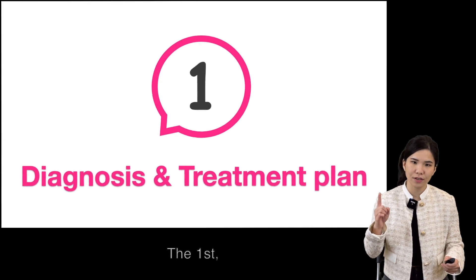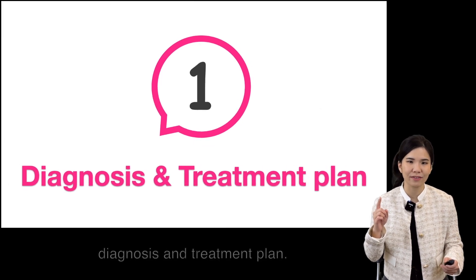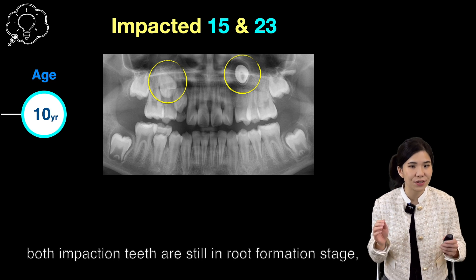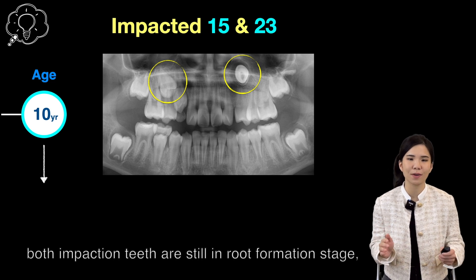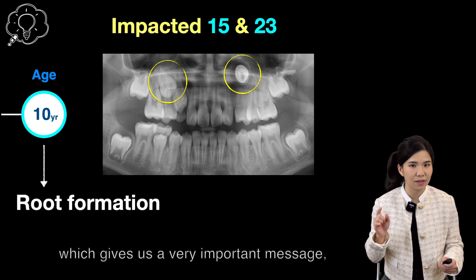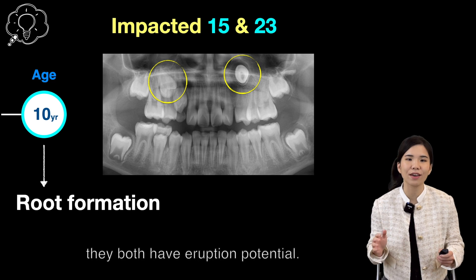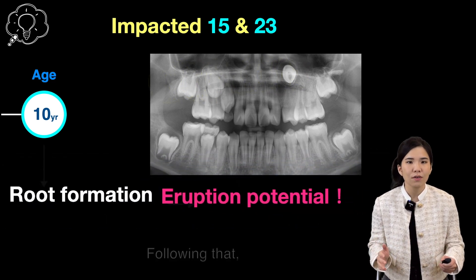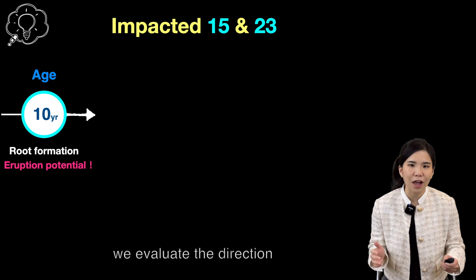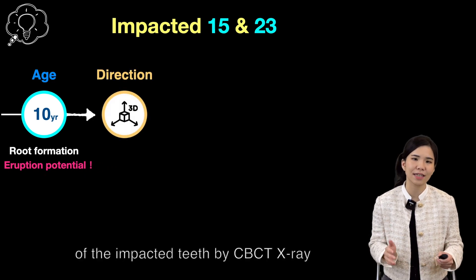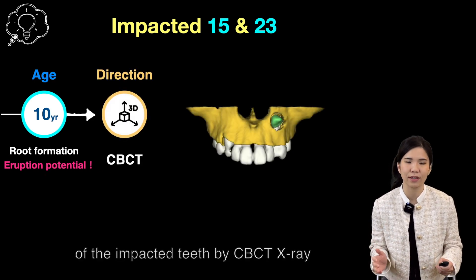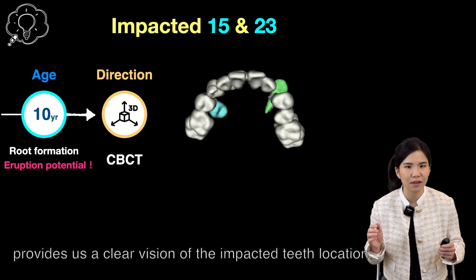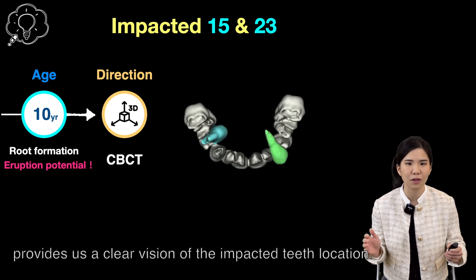First, diagnosis and treatment plan. Since the patient is 10 years old, both impacted teeth are still in the root formation stage, which gives us a very important message: they all have eruption potential. We will then evaluate the direction of the impacted teeth by cone-beam CT x-ray, which provides a clear vision of their location.